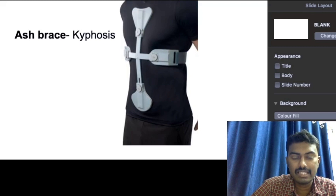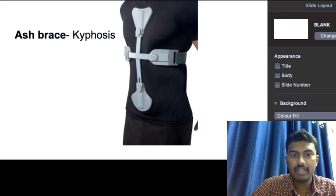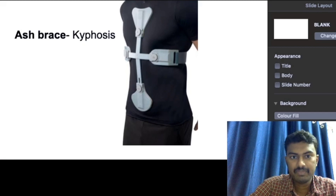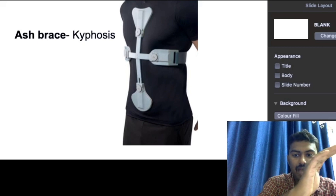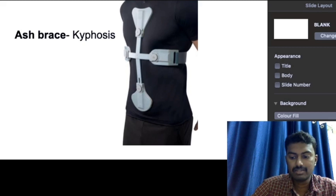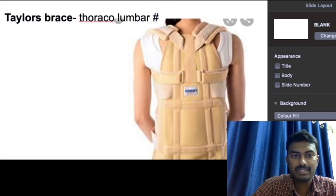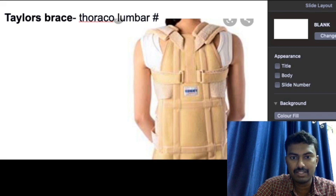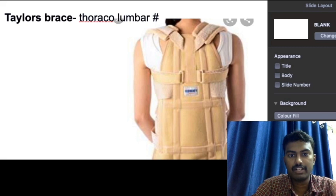The Ash brace is worn anteriorly, pushing the body posteriorly and causing hyperextension. It is used in kyphosis, where there is progressive anterior bending of the thoracic spine. The Taylor's brace has two collars around the shoulder, similar to a school backpack, and is worn in fractures of the thoracolumbar vertebra.